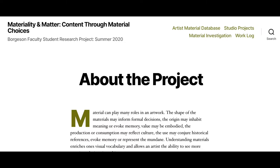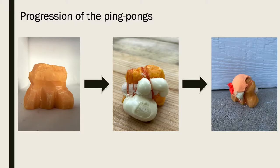Before I get into the categories, I just want to go over what the progression of these small ping pong sculptures looks like. On the far left, you can see this orange piece of soap is whittled down. Then in the next stage, it looks like some string and spray foam were added. Following that stage, some air dry clay was added on top. You can see this play between who has the material and what is added each week.